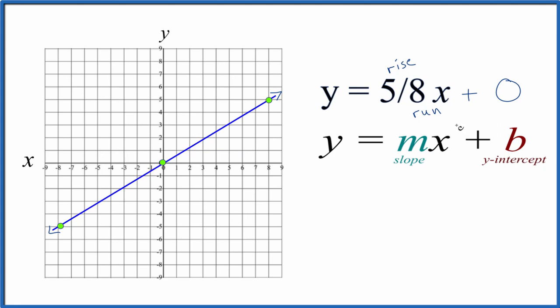Again, you could have used a table of values. You'd get the same graph. Slope-intercept form is a little bit easier though, especially when you have an equation with a fraction in it, like y equals 5/8x.